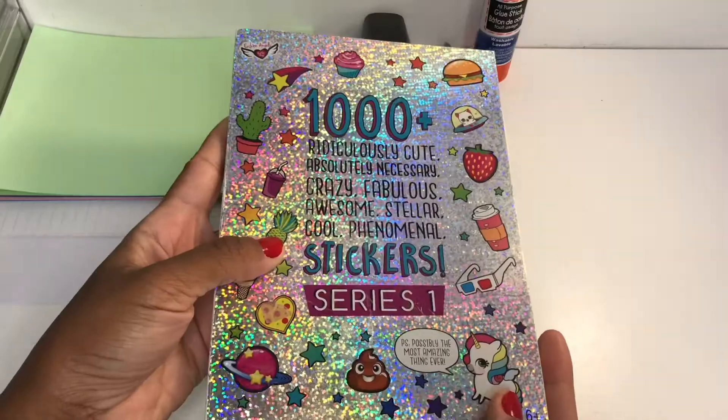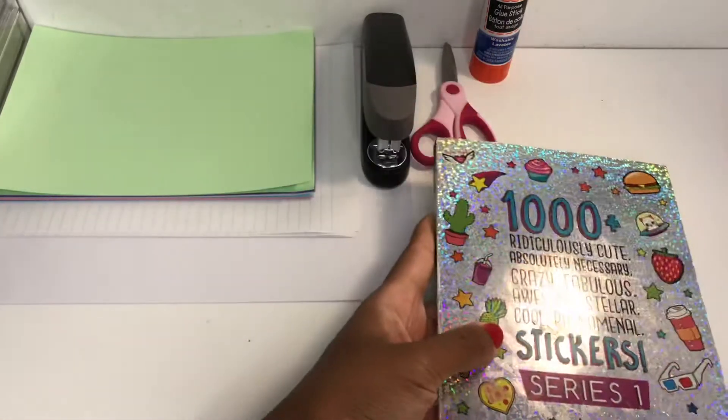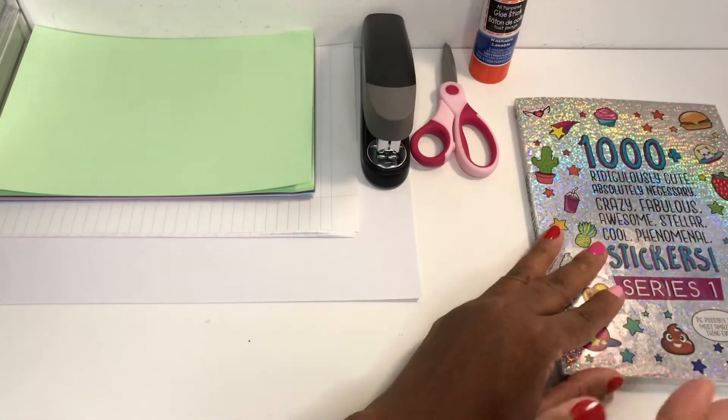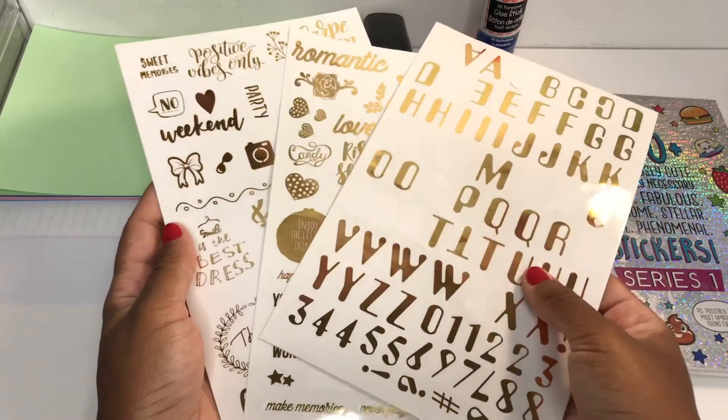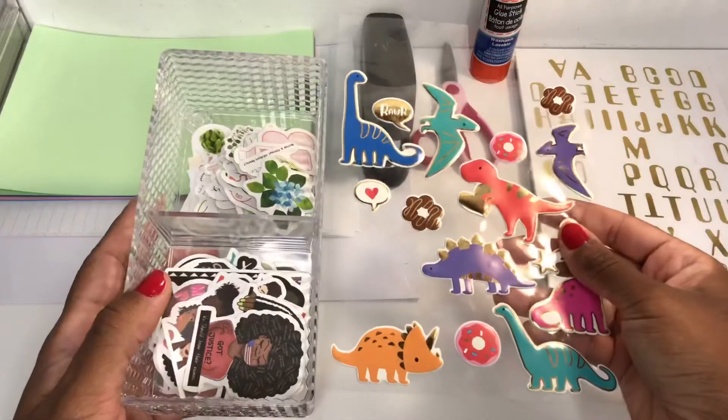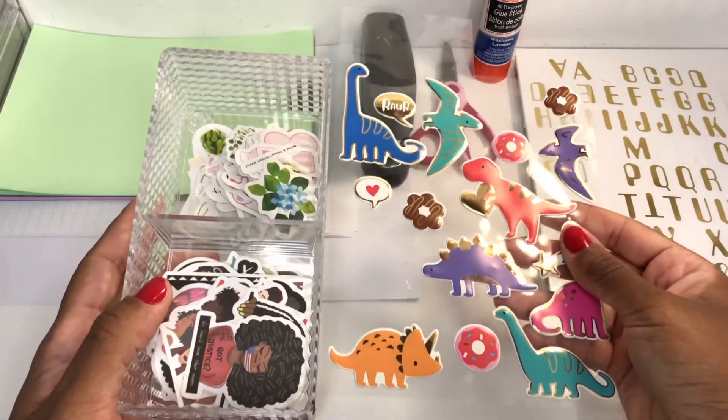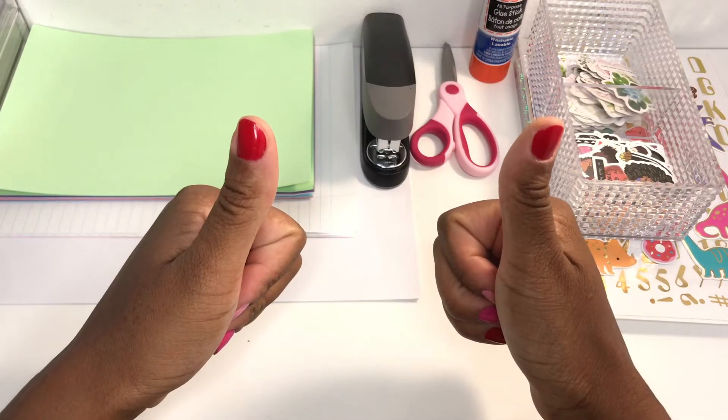For decoration we'll be using a sticker book—this one I will link down below that I got from Walmart—but I also have some other stickers like these ones that I got from the dollar store which are some of my favorites. This is just to make your journal more personal. And then here we have lots of colors, and that's pretty much it.